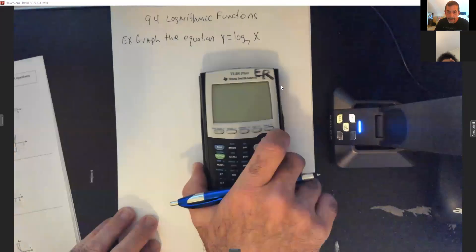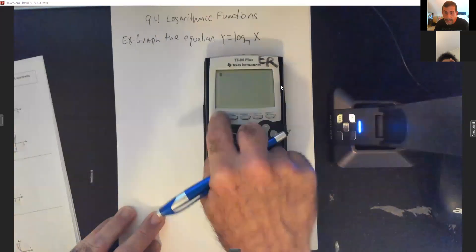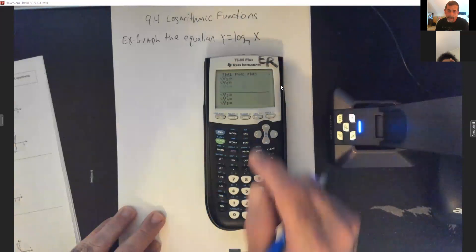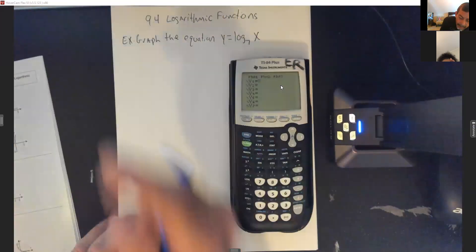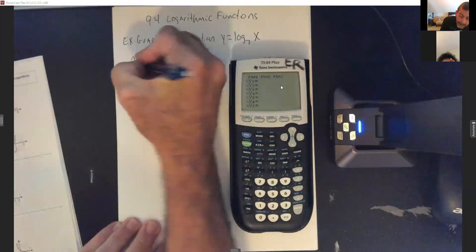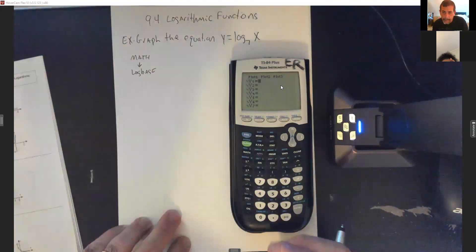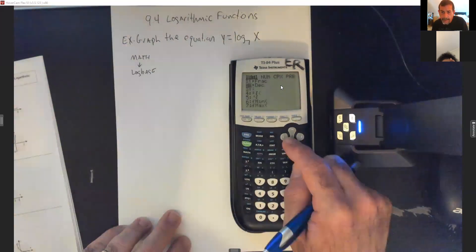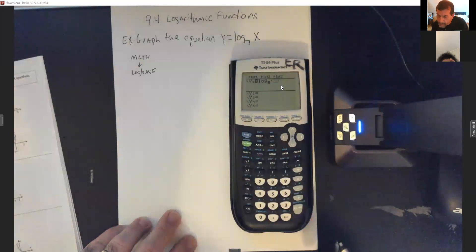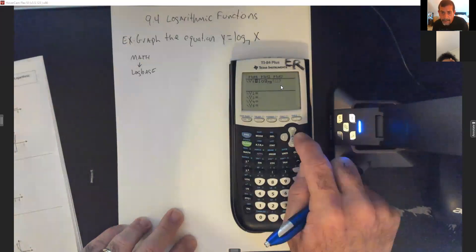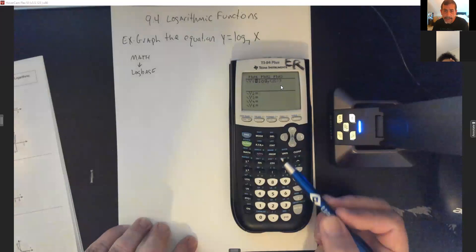Let me bring up my calculator. I'm going to turn it on, go to y equals, and clear everything out. I'll show you two ways to do this because some of you have the log base function and some don't. To get log base, hit math and arrow down until you find log base. Once you select it, put your 7 where the base is blinking, then arrow over and put in your x. Now it looks just like the equation, so just hit graph.